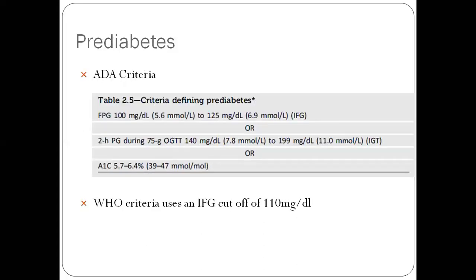This is the ADA criteria for the diagnosis of pre-diabetes. 100 to 125 is impaired fasting glucose and a GTT value between 140 to 200 is impaired glucose tolerance. Whereas A1c is 5.7 to 6.4. Importantly, the WHO criteria uses an IFG cutoff 110, not 100 but 110 for WHO but 100 for ADA. I'm going to stop here and we're going to go into the second presentation for finishing this off.